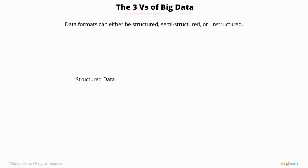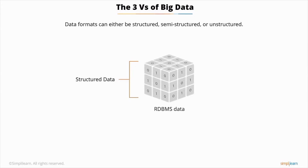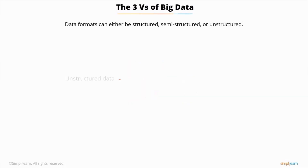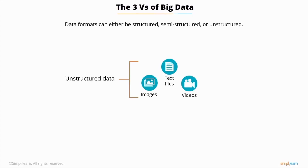Structured data is usually referred to as RDBMS data, which can be stored and retrieved easily through SQL. Semi-structured data is usually in the form of files like XML, JSON documents, and NoSQL databases. Text files, images, videos, or multimedia content are examples of unstructured data.